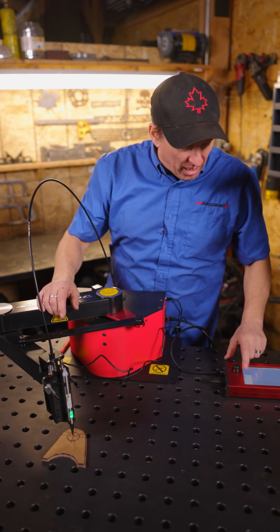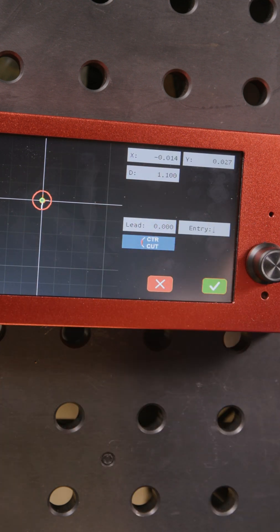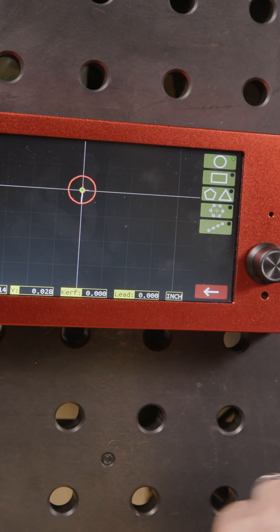Next thing, I'm going to choose the circle button, and I'm actually going to punch that, put in a 1.1 inch circle there. Good. We got our hole in the middle.